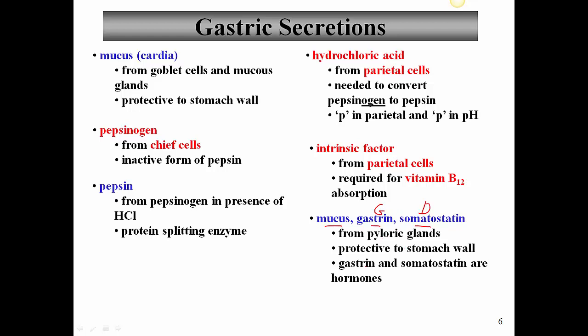The mucus is projected to the stomach wall. Gastrin and somatostatin are hormones. Now in infants primarily, we have an additional substance called rennin — spelled R-E-N-N-I-N, also sometimes called chymosin. What this basically does is coagulate milk proteins to make them more absorbable for the infant. We normally don't have this in adults. The other thing that infants have more of than adults is gastric lipase — an additional enzyme for breaking down fats because of the fats in milk and the infant's limited ability to digest.